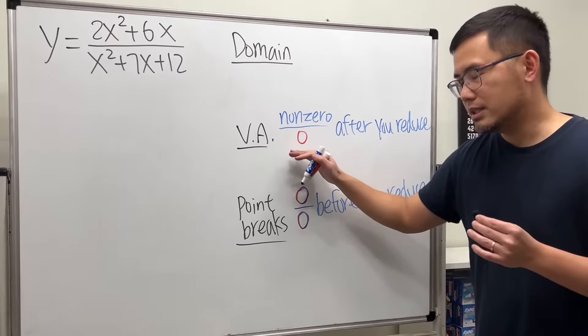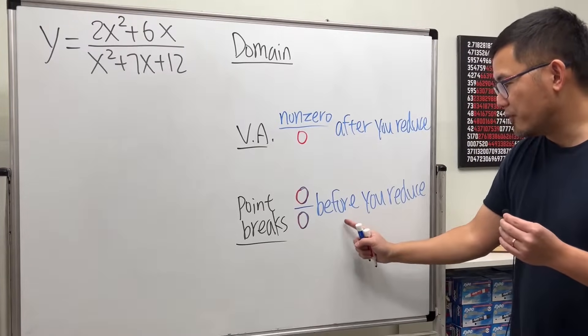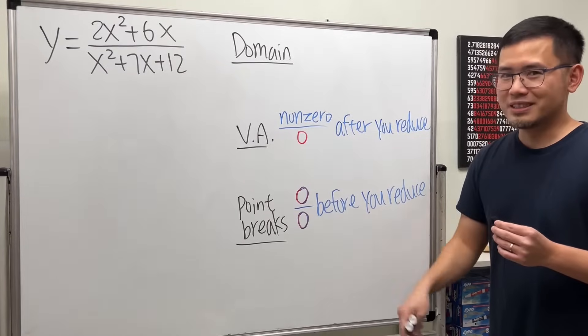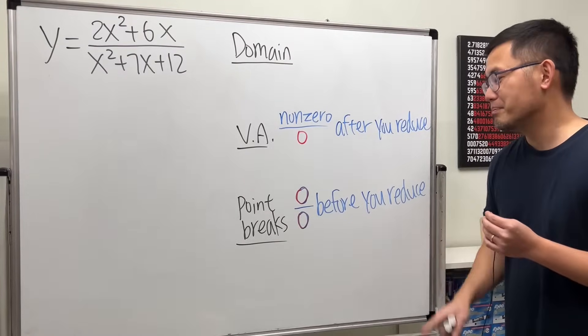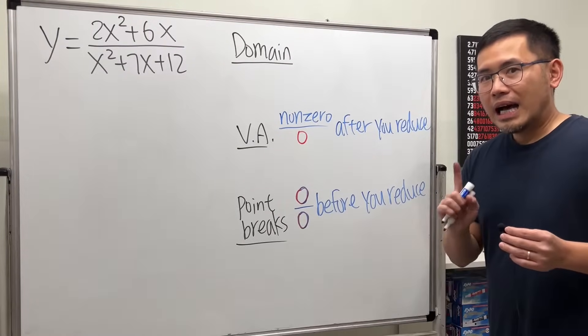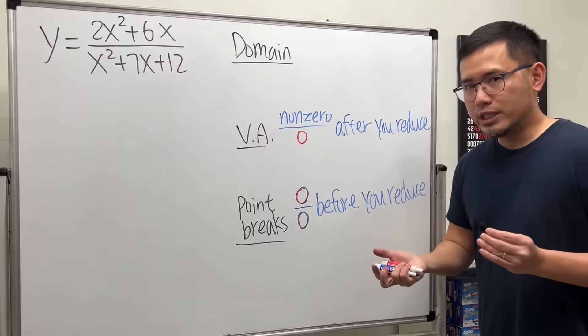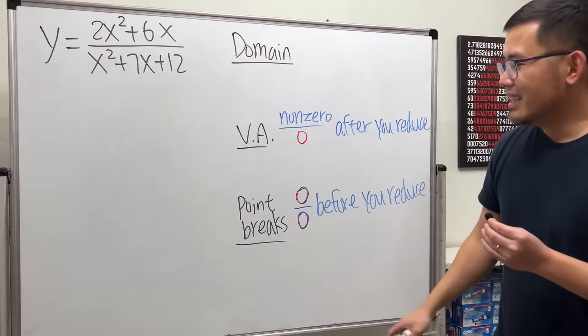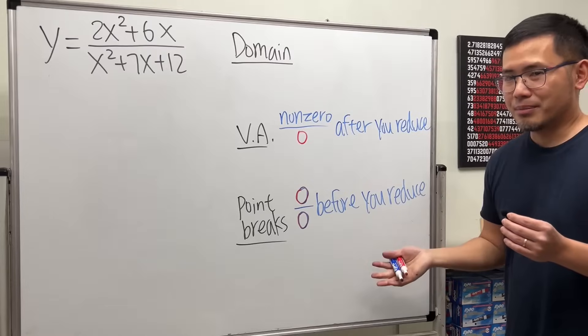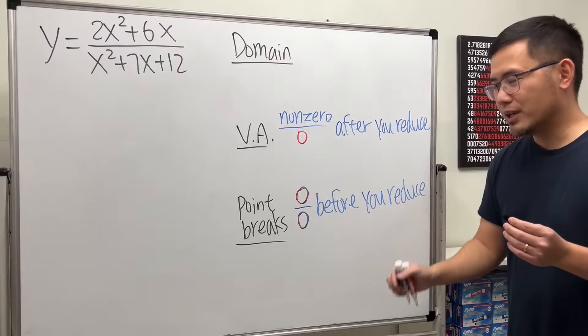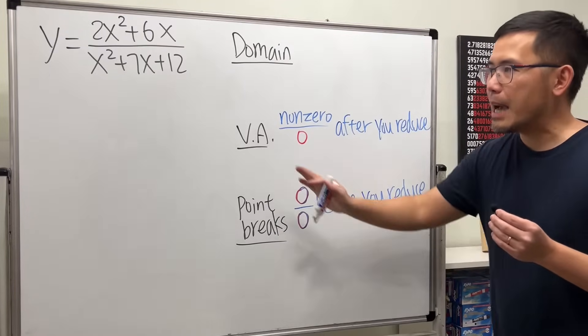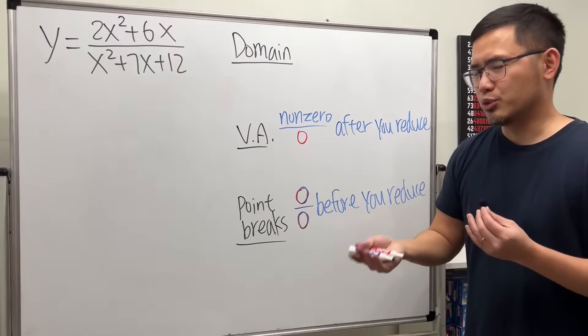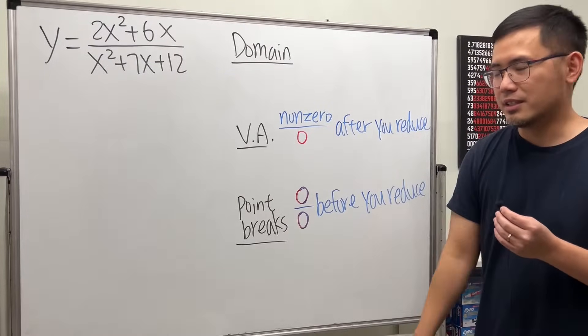Keep that in mind. This one is after you reduce. And this is before you reduce. If you reduce it already, then you don't see the zero over zero anymore. So be careful with that. However, there could be some tricky questions to rational functions. This right here, it's actually not complete. There's a second part to it. If you want to see a case like a tricky question, you can check out the video in the description.